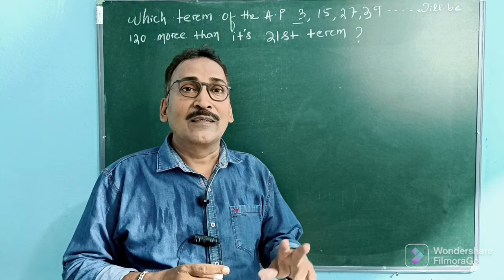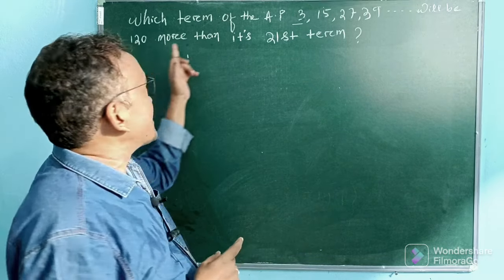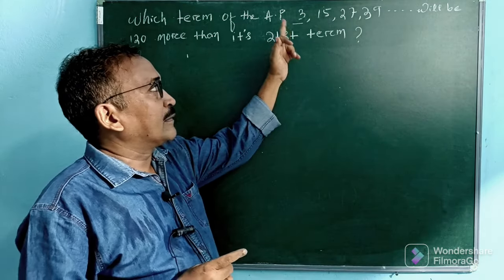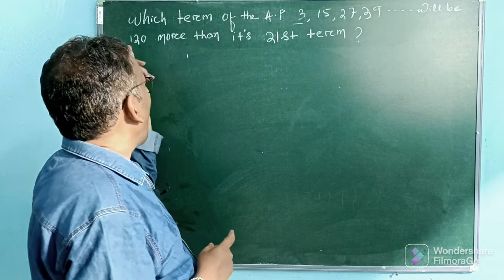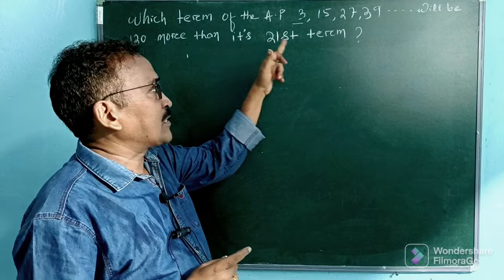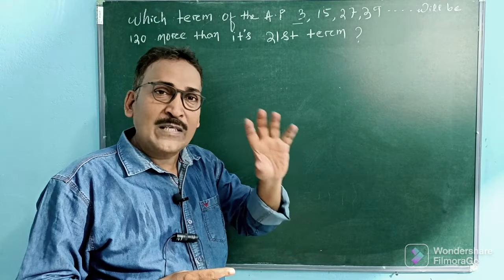Here we discuss one of the important questions: which term of the AP 3, 15, 27, 39 will be 120 more than its 21st term? This is the question and we have to see what is given here.